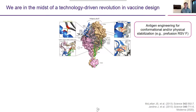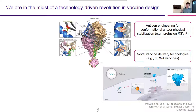I'll start by stating the obvious: we're in the midst of a technology-driven revolution in vaccine design. We are living this with the new vaccines that have come out for SARS-CoV-2. One of the areas seeing a huge amount of technical innovation is in antigen engineering for conformational or physical stabilization. Prefusion RSVF is one of the classic examples, but the 2P mutations in most COVID vaccines today are another example of how conformational stabilization can lead to improved vaccines.